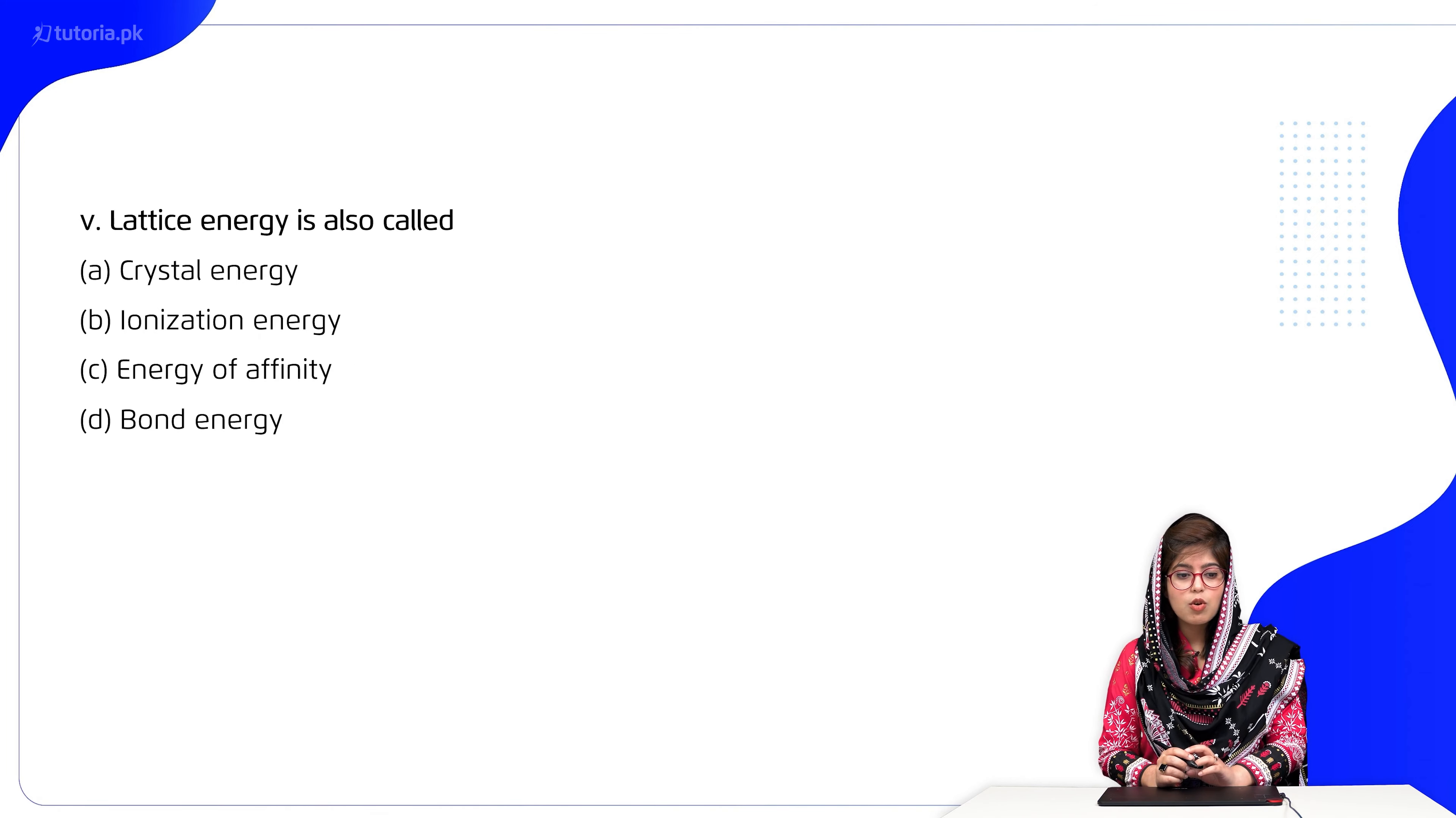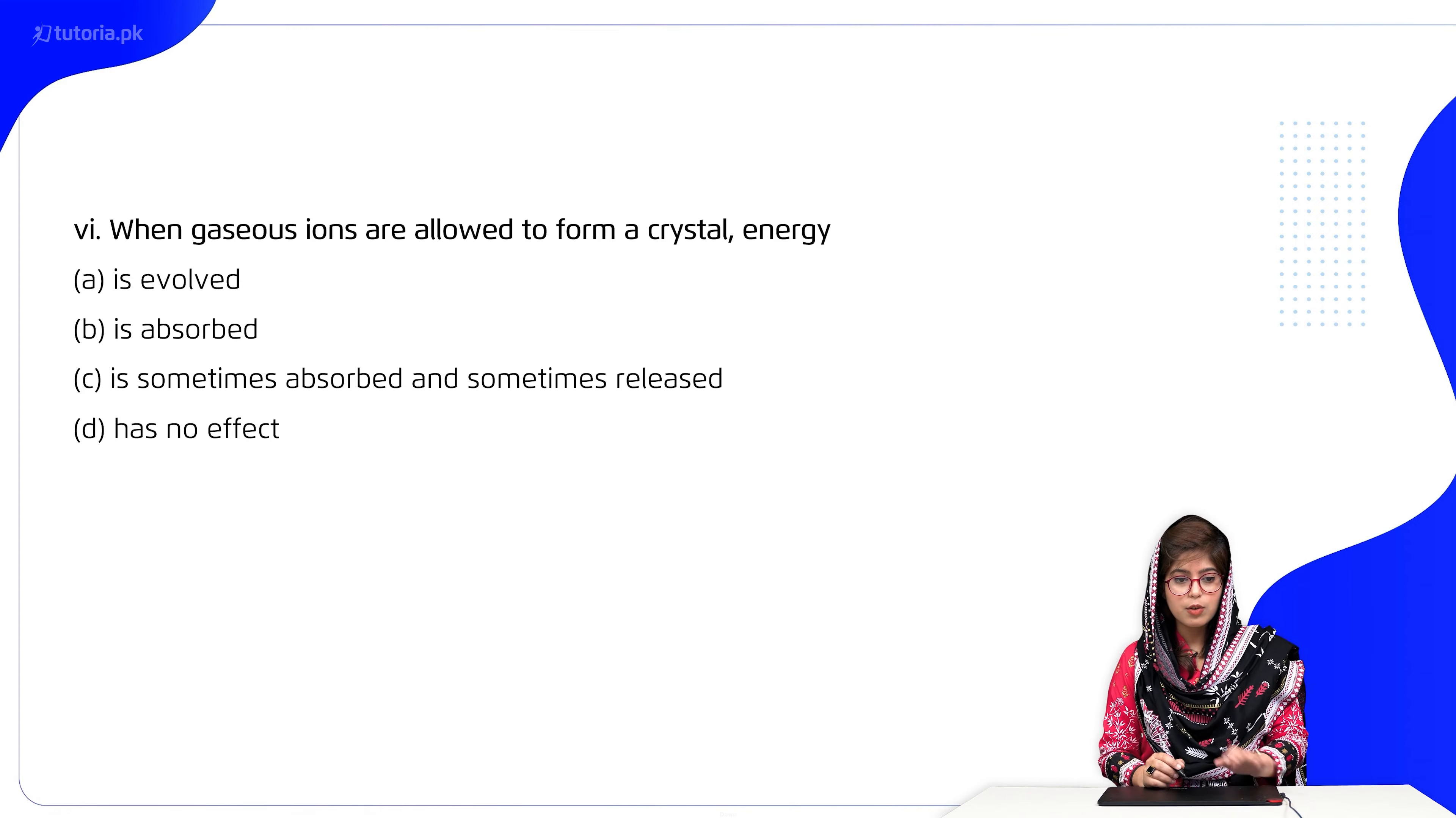Number 5: Lattice energy is also called as: A) crystal energy, B) ionization energy, C) energy of affinity, D) bond energy. So its another name is crystal energy. So option A is the right one.